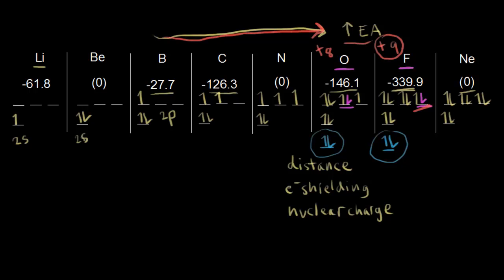Let's look at some exceptions. One exception is neon — it breaks the trend because you actually have to add energy for neon to accept an electron. The reason is that neon already has a completely full second energy level, with eight electrons filling all of its orbitals. If you try to add another electron to neon, it would have to go to the third energy level, which is not favorable. Neon is perfectly stable just the way it is, so adding an electron does not make it happy.